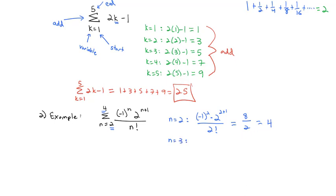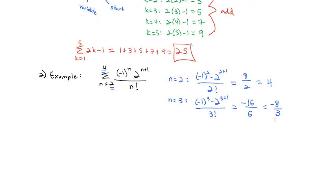Then n counts up to 3: negative 1 to the 3rd power times 2 to the 3 plus 1 over 3 factorial. When negative 1 is cubed, that gives a negative. 2 to the 4th power is 16, over 3 factorial which is 3 times 2 equals 6, so that simplifies to negative 8/3. Continuing, when n equals 4: negative 1 to the 4th power times 2 to the 4 plus 1 over 4 factorial. Negative 1 to the 4th is positive 1, 2 to the 5th is 32, divided by 4 factorial which is 4 times 3 times 2 equals 24. Dividing both by 8, we get 4/3.